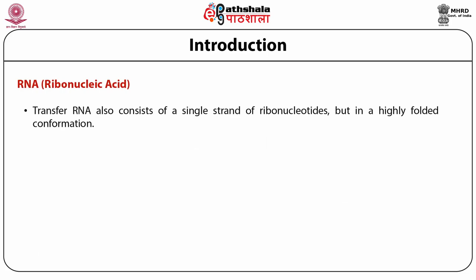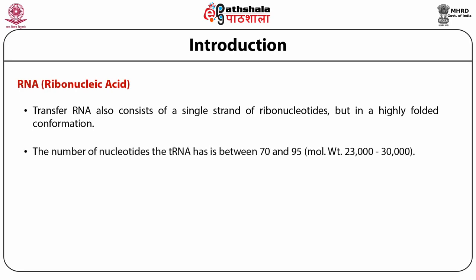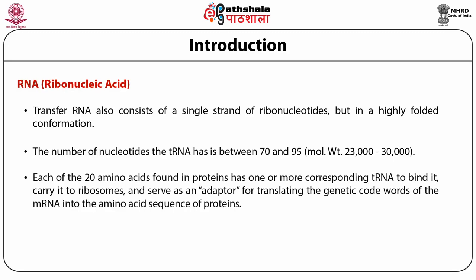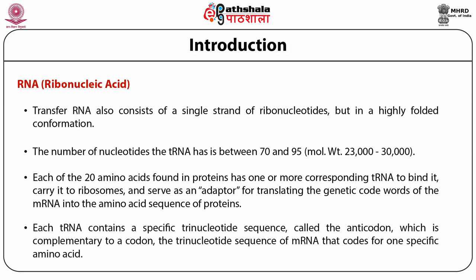Transfer RNA also consists of a single strand of ribonucleotides, but in a highly folded conformation. The number of nucleotides in tRNA is between 70 and 95, and the molecular weight ranges from 23,000 to 30,000. Each of the 20 amino acids found in proteins has one or more corresponding tRNA to bind it, carry it to ribosomes, and serve as an adapter for translating the genetic code words of the mRNA into the amino acid sequence of proteins. Each tRNA contains a specific trinucleotide sequence called the anticodon, which is complementary to a codon — the trinucleotide sequence of mRNA that codes for one specific amino acid.